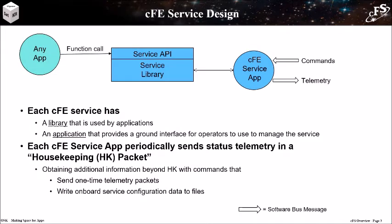Each service has the same architectural design that contains a library component and an application. The library component defines the service's API and provides the functionality that is used by an application. The application provides a command and telemetry interface to the ground. For example, consider the event service — an application sends an event by calling the event service's send event function.